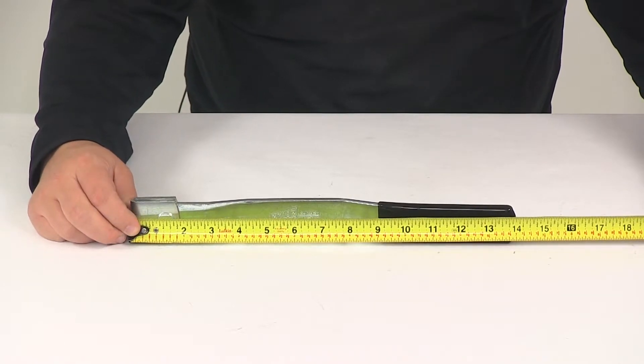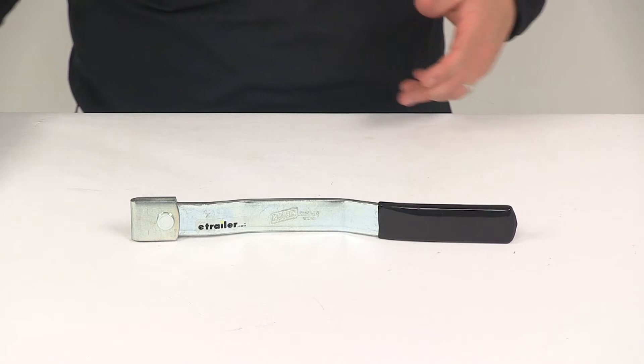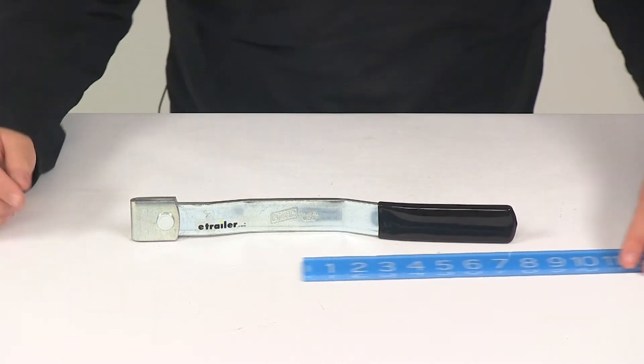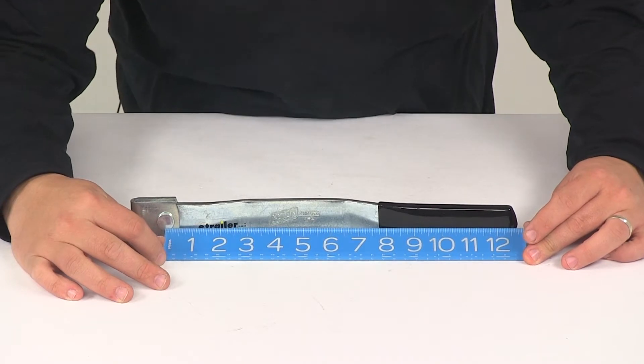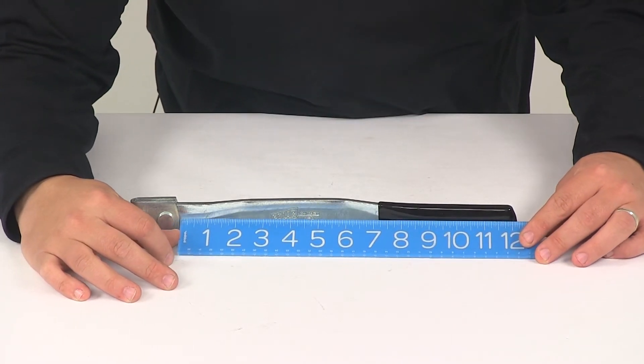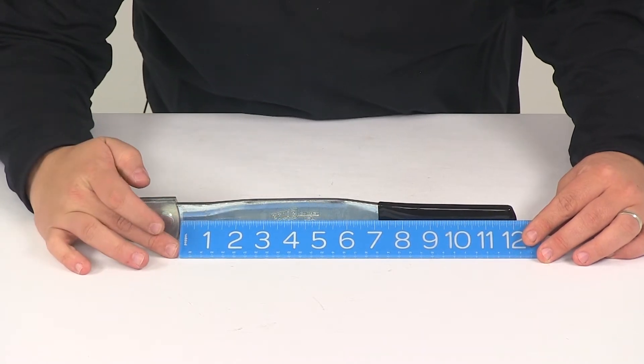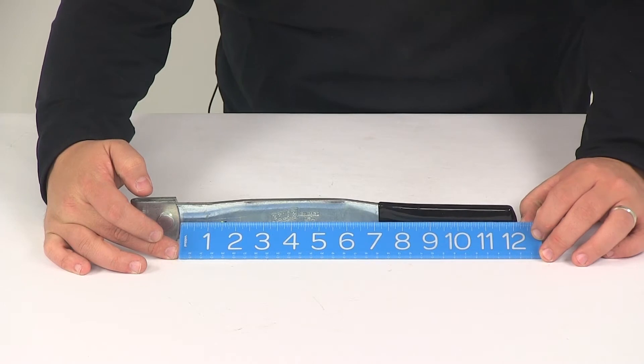Again that's overall length, taking a measurement from the center of the rivet to the end of the handle. That's going to be about 12 and 5 eighths of an inch, and then from the very front of that mount to the end of the handle, we're looking at a measurement of about 12 and 1 quarter inches.